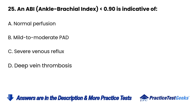Question 25. An ABI (ankle brachial index) less than 0.90 is indicative of: A. Normal perfusion. B. Mild to moderate PAD. C. Severe venous reflux. D. Deep vein thrombosis.